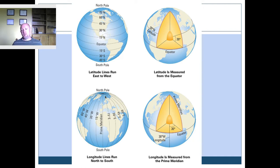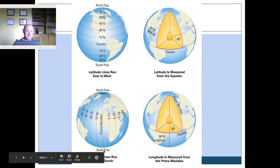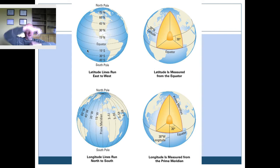Down here we have longitude. The prime meridian is zero degrees longitude. Here you're to the right of it — 15 degrees east. Here you're 15 degrees west, and so on. Notice how all of the lines of longitude meet at the north pole and the south pole. So whereas lines of latitude are always parallel and never touch, lines of longitude all touch each other and come together at the north pole and the south pole.